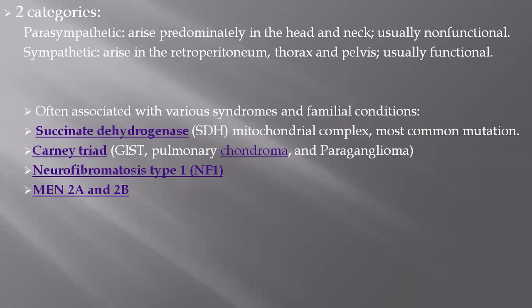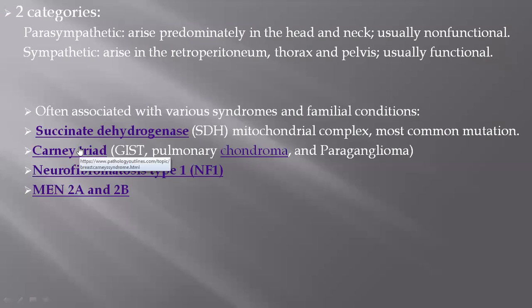It is very rare that paraganglioma arises independently; the majority of the time they are associated with various other syndromes. The most common is the succinate dehydrogenase (SDH) mitochondrial complex mutation, accounting for around 20% of cases. This enzyme plays a significant role in the Krebs cycle and in the electron transport chain, and has subunits A, B, C, and D — the B subunit is most common and A is very rare. When paraganglioma arises with an SDH mutation, the tumor commonly has malignant potential and is multifocal.